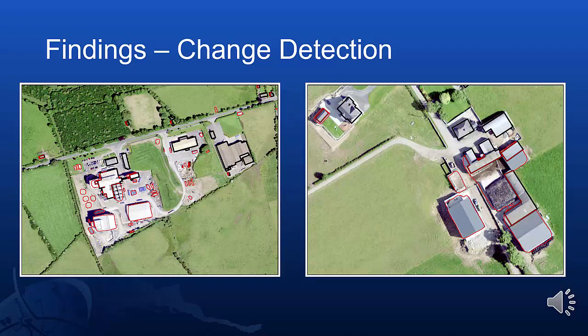These images show the OSI Prime 2 features in bold black and they also show the detected features in red. You can see in the images that there are some false positives, and these are largely still artificial surfaces that we couldn't separate out using the NDVI.